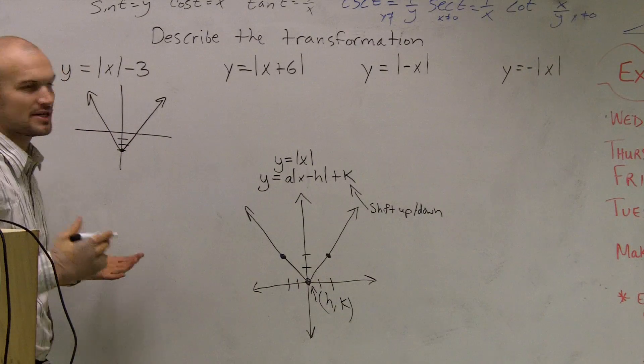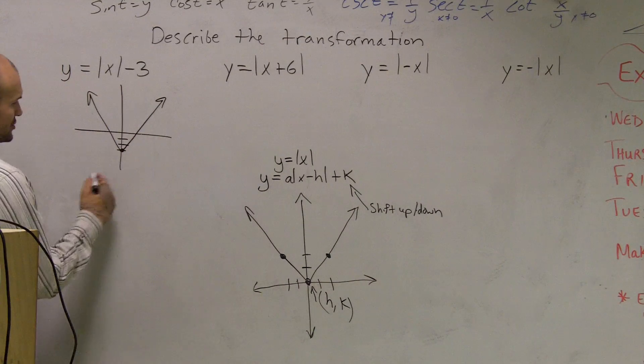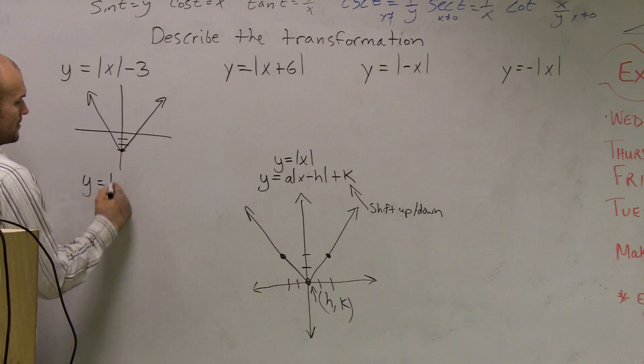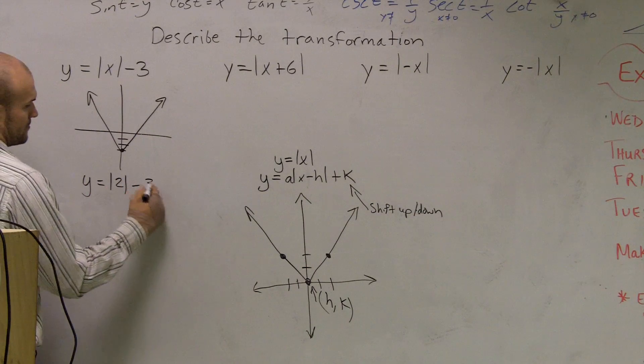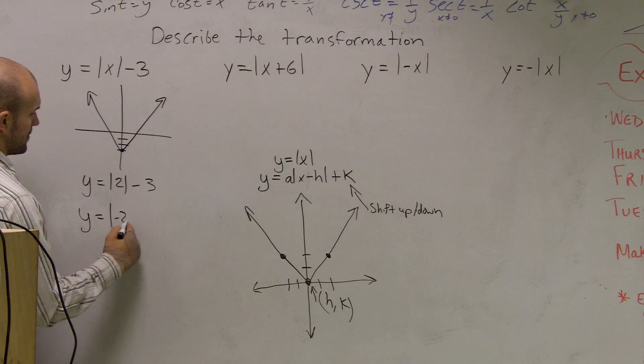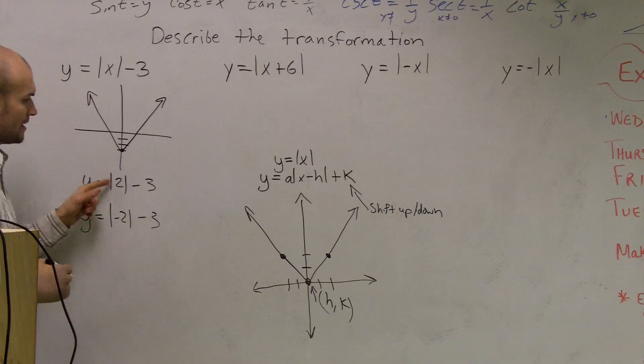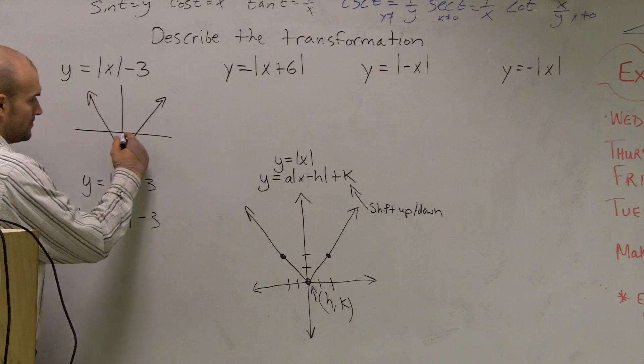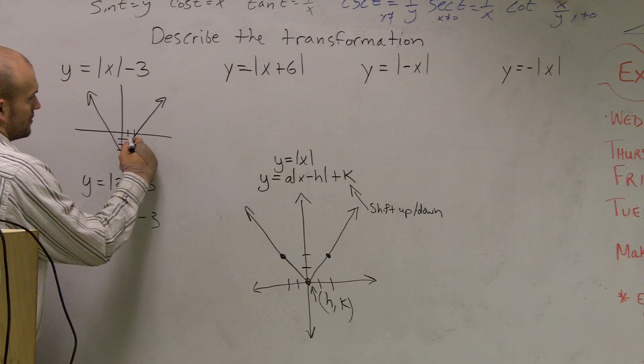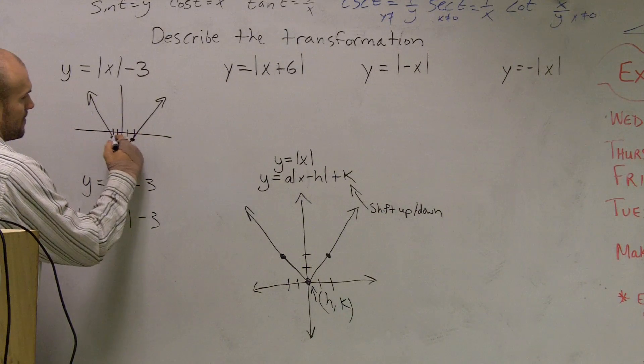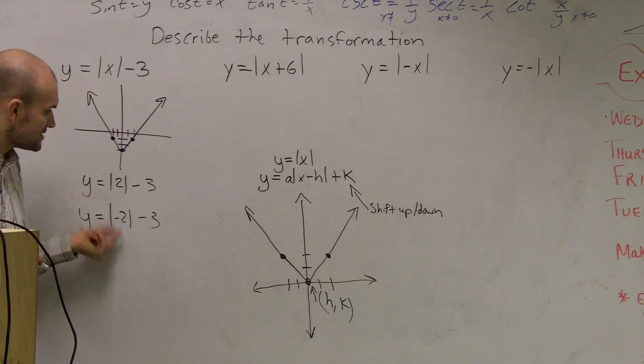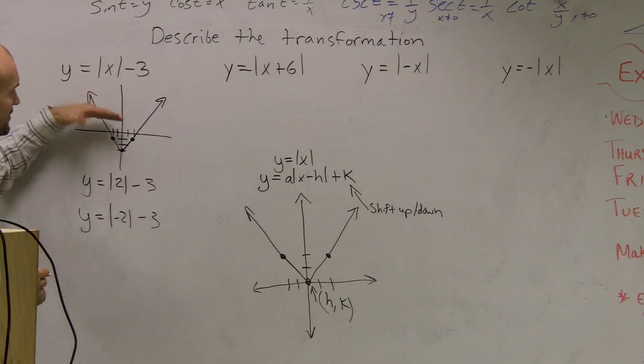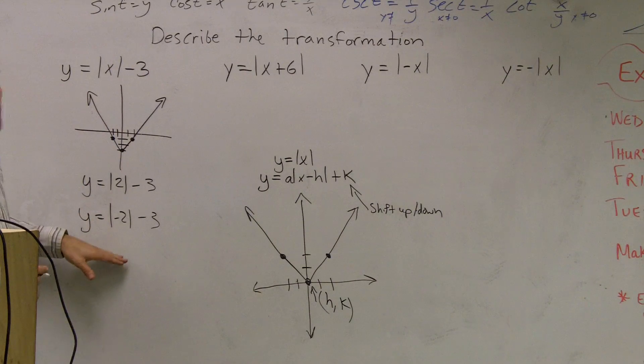And let's take a look at a table just to make sure that's going to be correct. Let's choose our two points again, y equals 2. Well, y equals 2, absolute value of 2 is 2, 2 minus 3 is negative 1. And again, the absolute value of negative 2 is 2 minus 3 is still negative 1. So you can see how this graph shifted it downwards, and this is going to make sense.